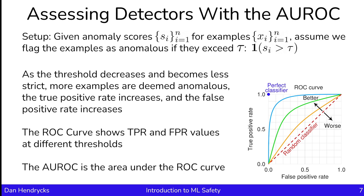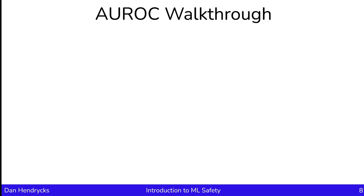One can think of the AROC also as the probability that an anomaly has a higher anomaly score than a typical example. So if we randomly sample a typical example and randomly sample an anomalous example and compute their anomaly scores, the probability that the anomalous example has a higher anomaly score than the typical example is the AROC. If the probability is 50%, our anomaly scoring function isn't any good. If the probability is 100%, we're reliably separating between anomalous and typical examples.